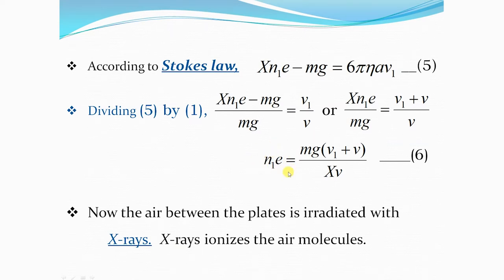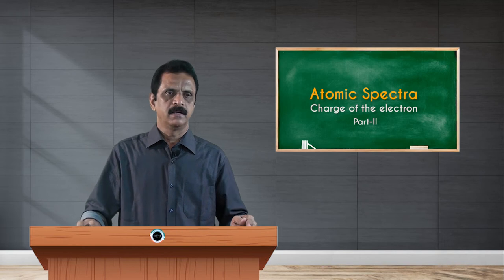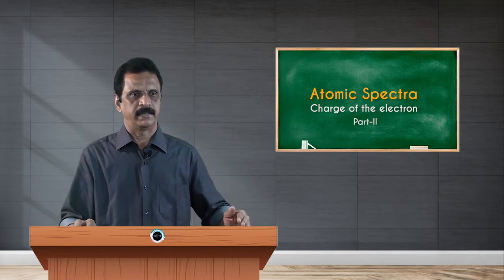Simplifying, the number of charges N1 on the drop is given by Mg(V1 + V) divided by XV, where M is mass of the drop, g is acceleration due to gravity, X is the strength of the electric field, V is the terminal velocity in the absence of the electric field, and V1 is the terminal velocity in the presence of the electric field.